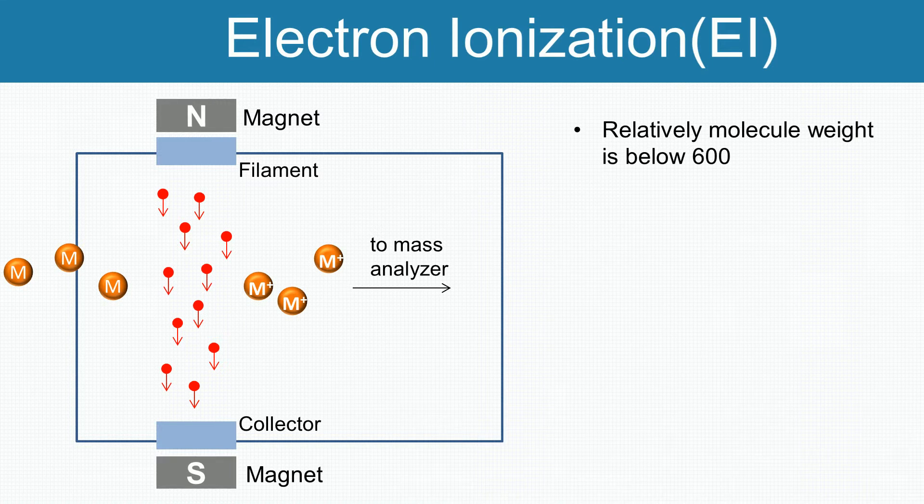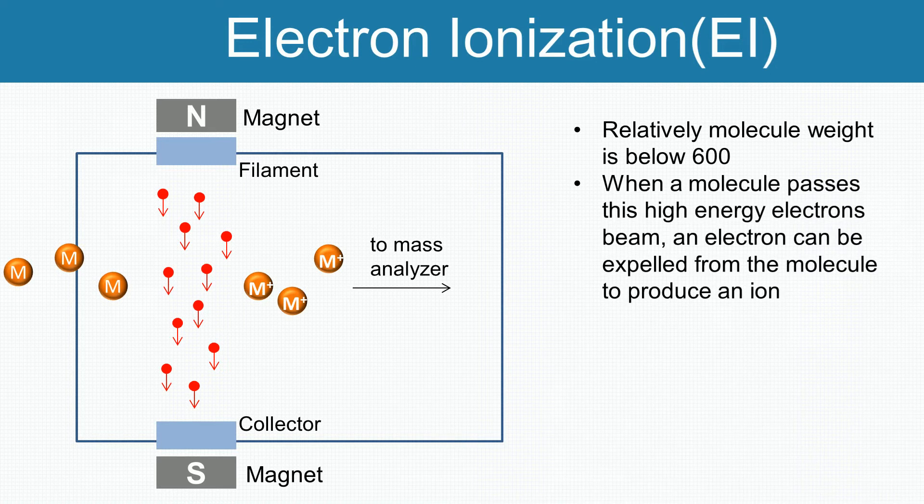An electric field accelerates these electrons to produce a beam of high-energy electrons. When a molecule passes this high-energy electron beam, an electron can be expelled from the molecule to produce an ion.